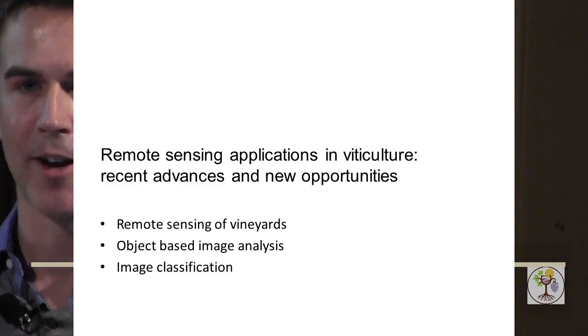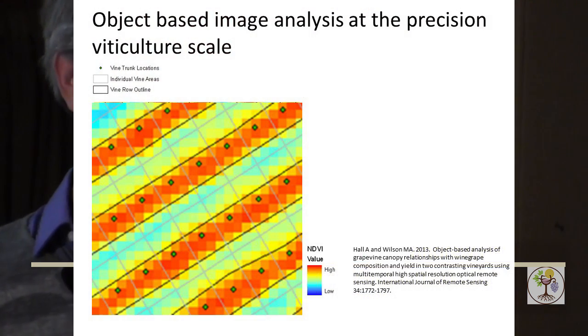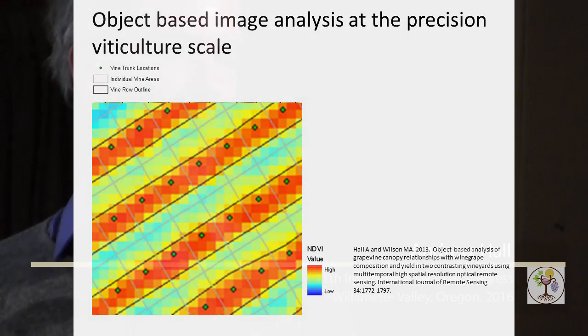The first area is remote sensing of vineyards — just to give you an outline of what I'm talking about there. The new technique I'm using is a relatively new way of thinking about things called object-based image analysis, and that's how I analyse my imagery. And then I've got a couple of examples of image classification, one of which is within the framework of object-based image analysis.